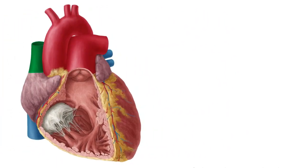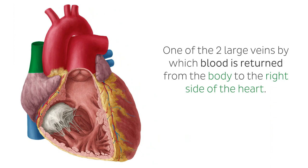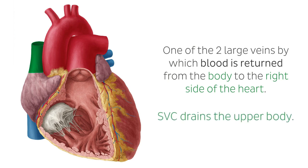The SVC is one of the two large veins by which blood is returned from the body to the right side of the heart. After circulating through the body systemically, deoxygenated blood returns to the right atrium through either the SVC, which drains the upper body, or the inferior vena cava, IVC, that drains everything below the diaphragm.